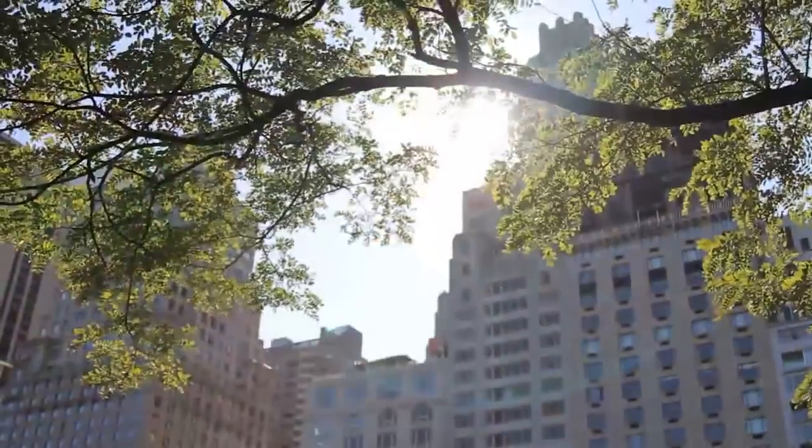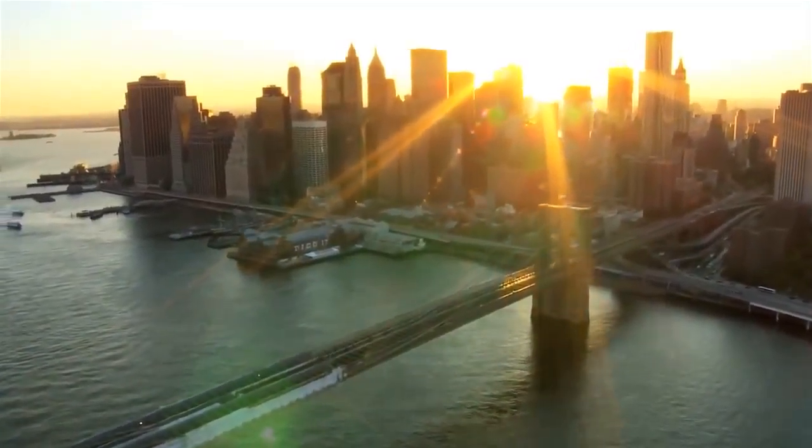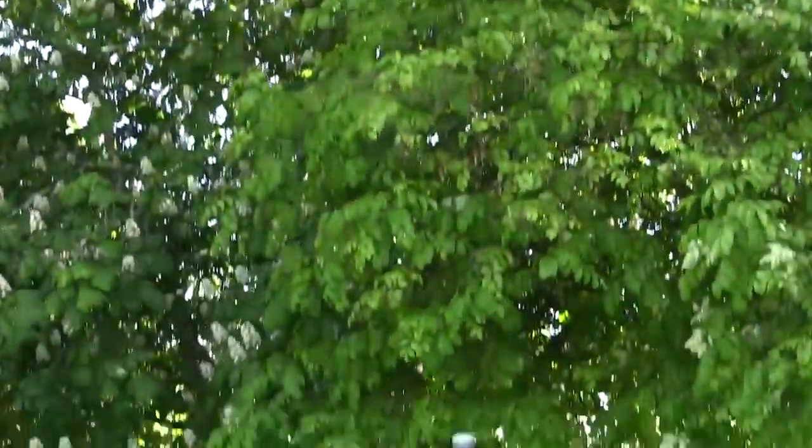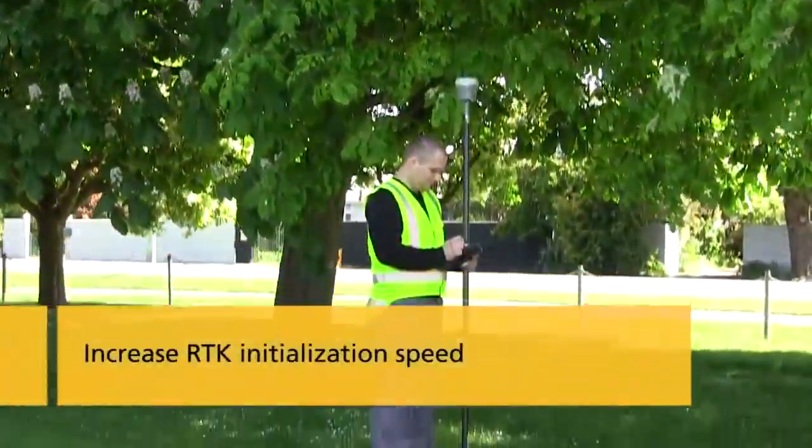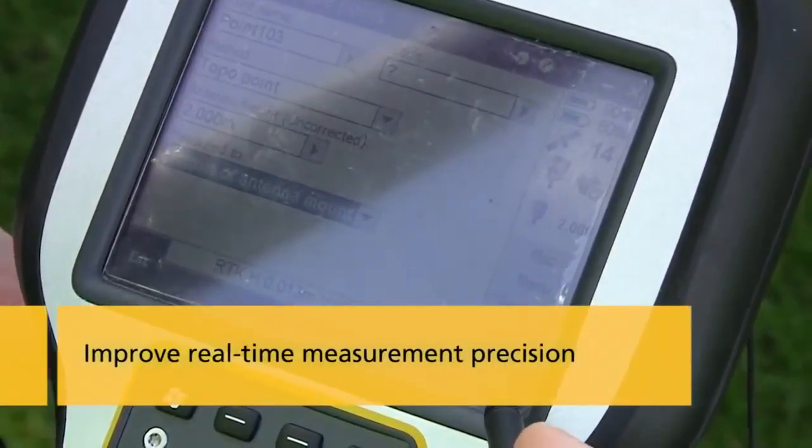Using HD GNSS near trees or in dense urban areas is not a problem with the Trimble R-10. It is now possible for surveyors to expand the reach of their GNSS rovers into areas that were previously too obscured.